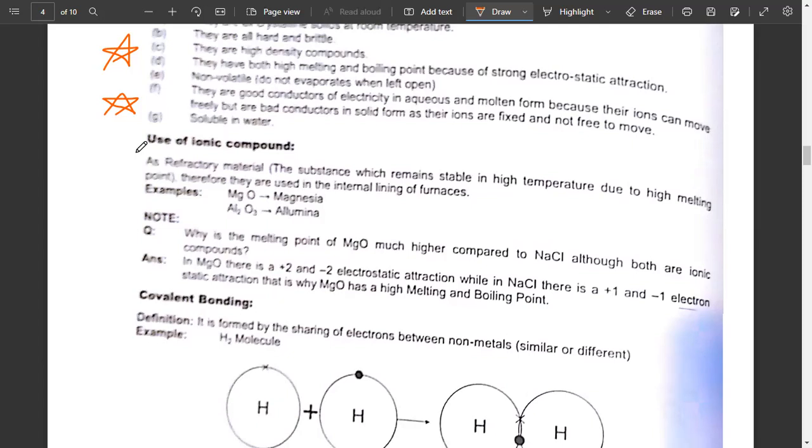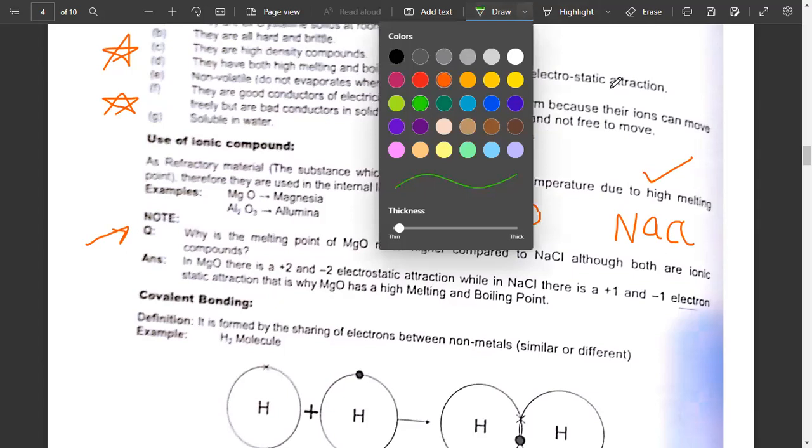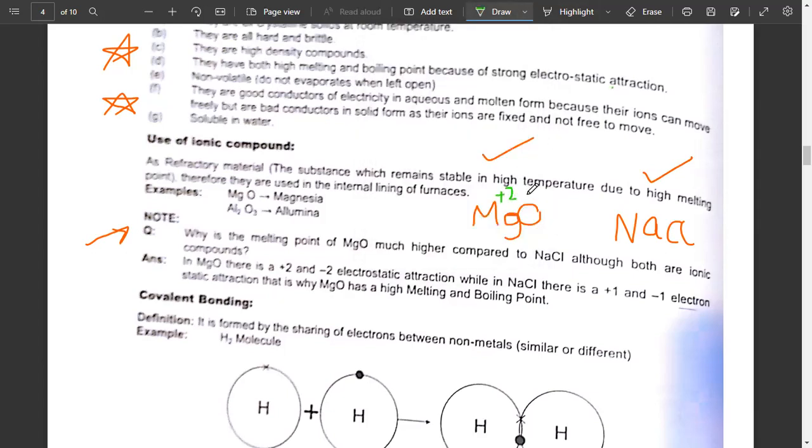Now, a question: why is the melting point of MgO higher as compared to NaCl? NaCl is an ionic compound, MgO is an ionic compound. The only difference is that in MgO, magnesium is plus 2 and oxygen is minus 2. In NaCl, sodium is plus 1 and chlorine is minus 1. Although both are ionic compounds, why is the melting point of MgO much higher?